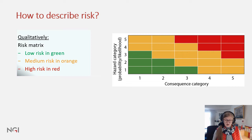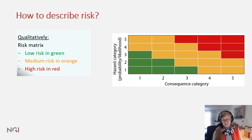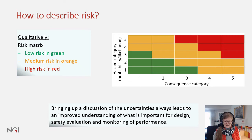How do we describe risk? Qualitatively, with the risk matrix, where we have the hazard on the vertical axis divided in five categories, and the consequences on the horizontal axis also divided in five categories — though it could be divided in seven or three. The severity increases with the higher number, and you define areas with low risk, medium risk, and high risk. You can then place your different threat and consequence scenarios in this matrix. Even this simple method, just by bringing up the discussion of uncertainties, always leads to an improved understanding of what is important for design, safety evaluation, and what needs to be monitored.